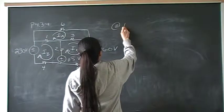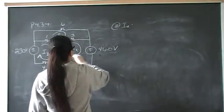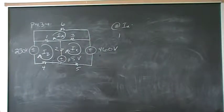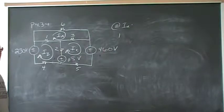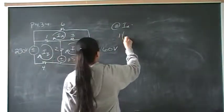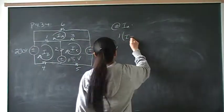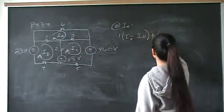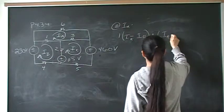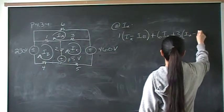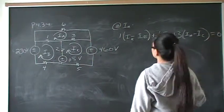Let's start at mesh IA. We have one ohm, and remember V equals IR. Each voltage drop across those resistors is the resistor times the net current. The net current through the first resistor is IA minus IB — that's the first voltage drop. The next voltage drop is 6·IA. And the last voltage drop is 3 times (IA minus IC). All of that has to equal zero.